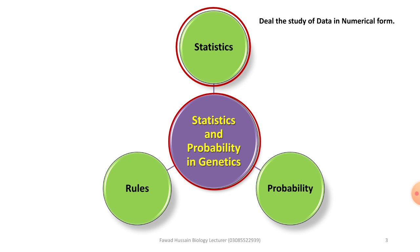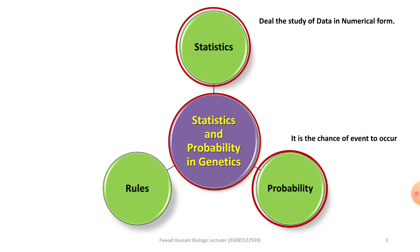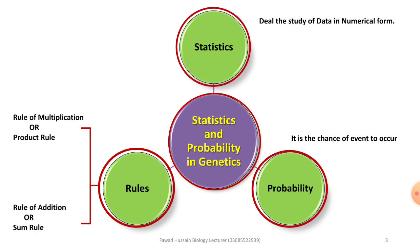Statistics is the study of data in numerical form — we have a large amount of data in numerical form that we study. Probability is the chance of an event to occur. There are two important rules we have to learn: the first one is the rule of multiplication or product rule, and the second one is the rule of addition or sum rule.